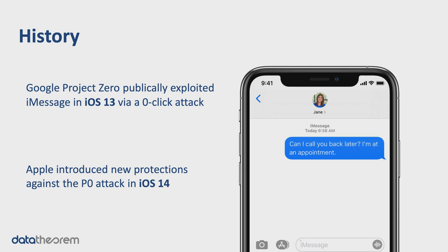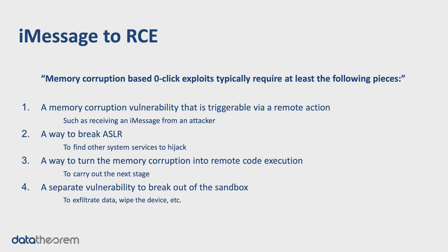Google Project Zero publicly exploited iMessage in iOS 13 via a zero-click attack, and with iOS 14 Apple has added new protections. From a high level, to carry out a zero-click attack against iMessage or any remotely accessible platform, there are a few pieces you would need. Firstly, some kind of memory corruption vulnerability that you can trigger via a remote action — in this case, by sending a maliciously constructed iMessage payload.